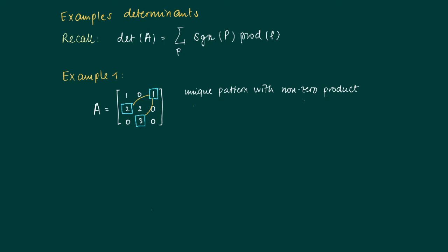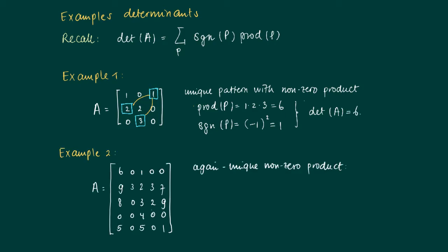The sign depends on the number of inversions prescribed by this pattern P. The number of inversions counts elements that are misplaced in the sense that something is to the right and above the element. With 2 inversions here, so the determinant is 6.